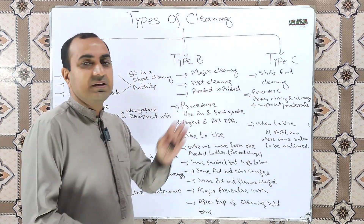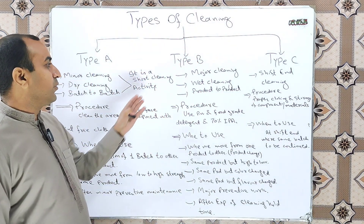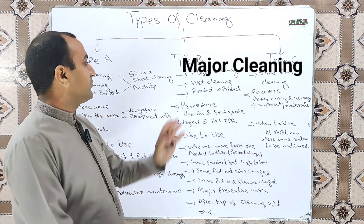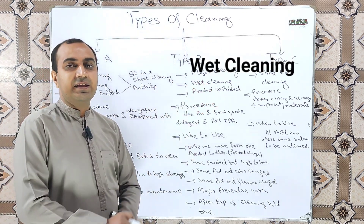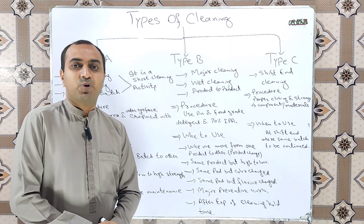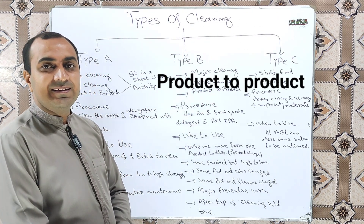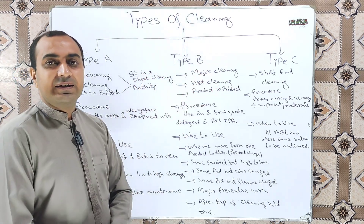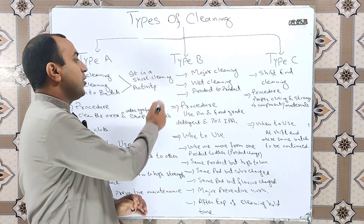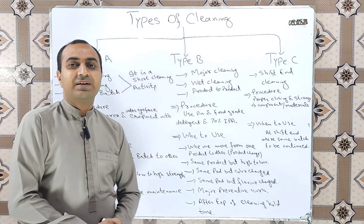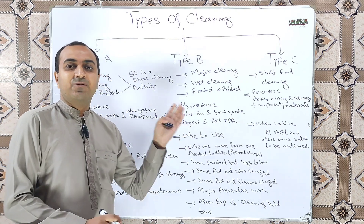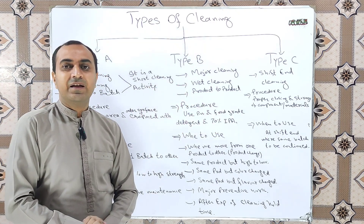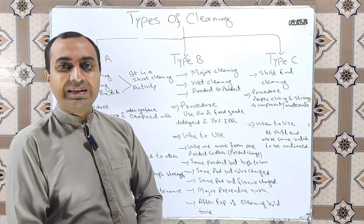Type B cleaning is also known as major cleaning. Type B cleaning is also known as wet cleaning, and product-to-product cleaning is another name used for Type B cleaning.